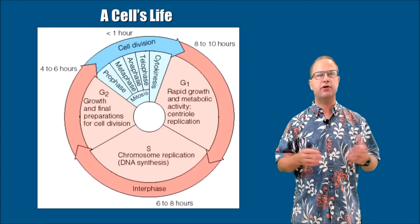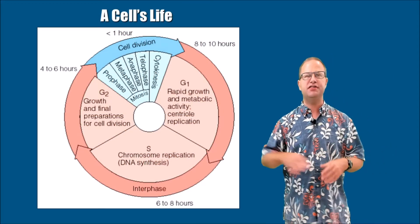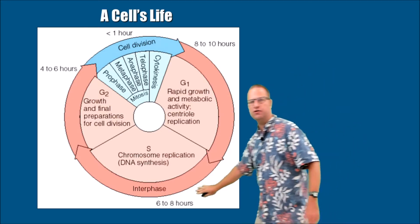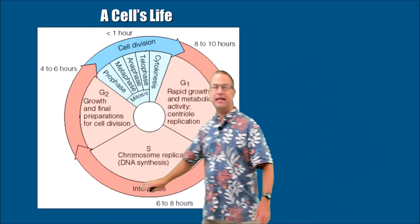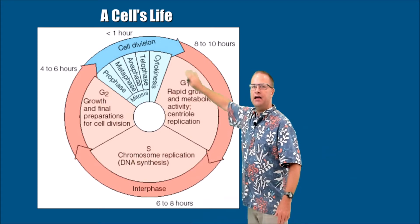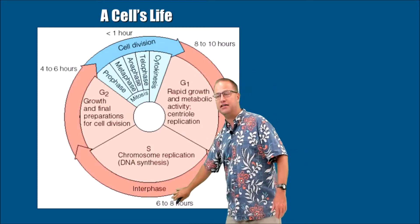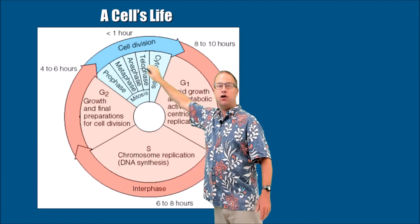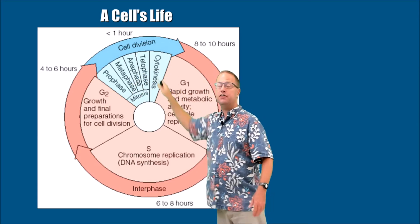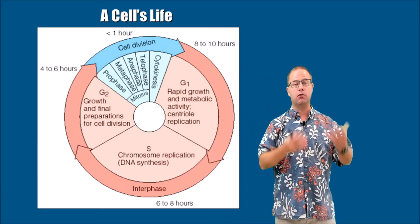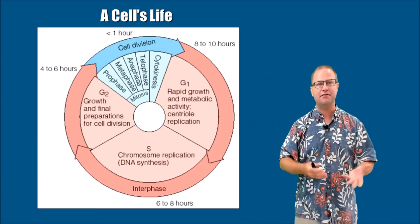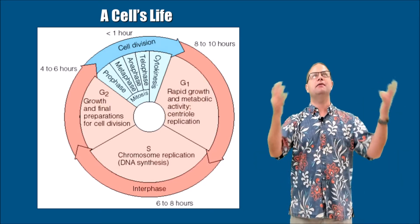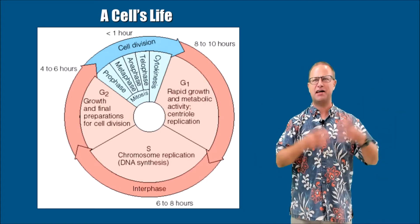This slide just shows a diagram of a cell's life cycle. Most of it is in orange, and that orange part is called interphase — the in-between phase when the cell is not actively dividing. The cell division phase is called mitosis, and it accounts for actually a very small proportion of the cell's life cycle. Over 75% of the cell's life cycle is spent in the in-between phase.